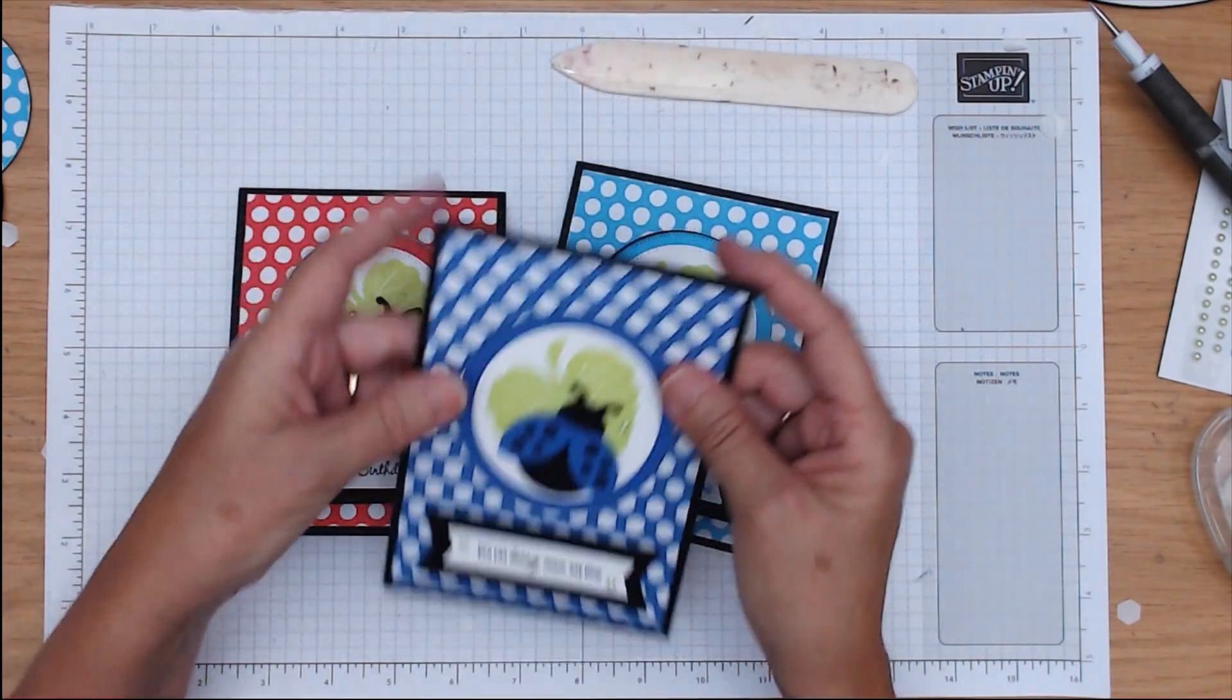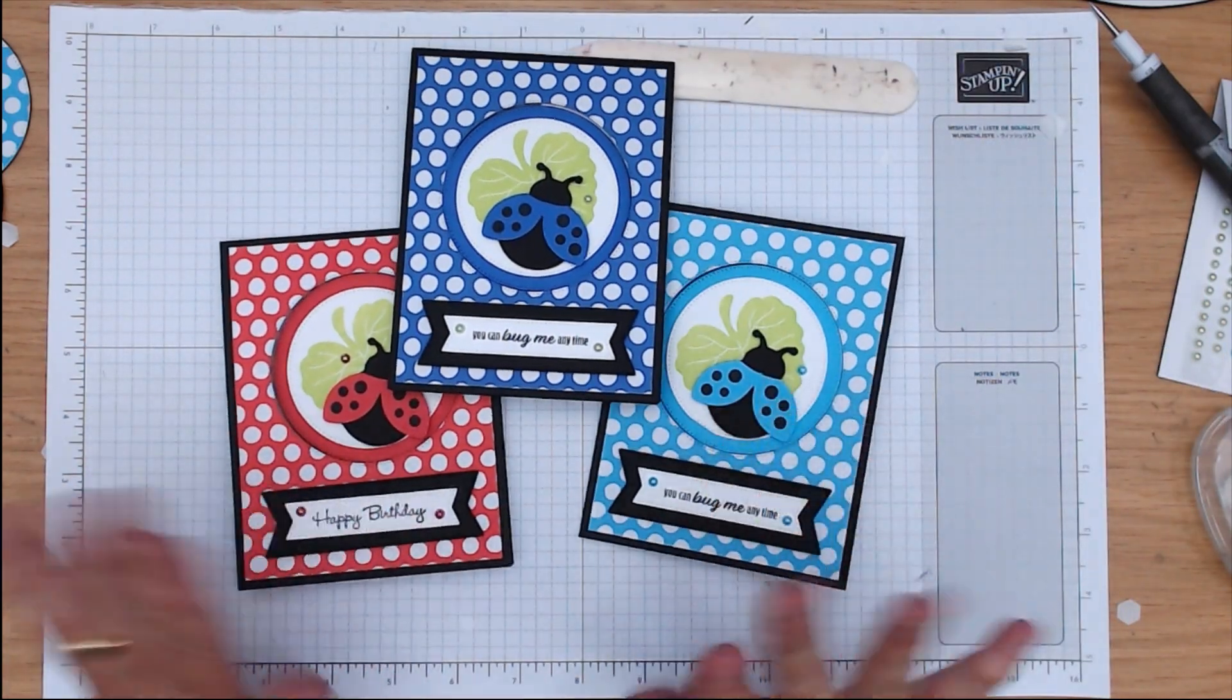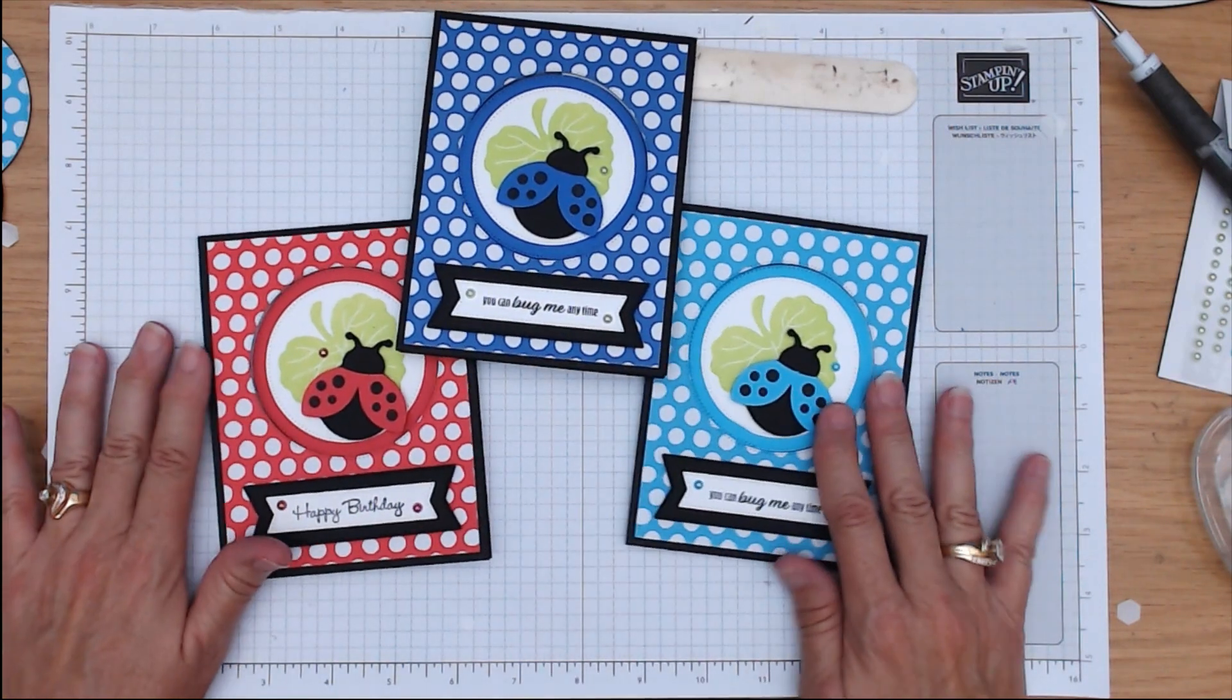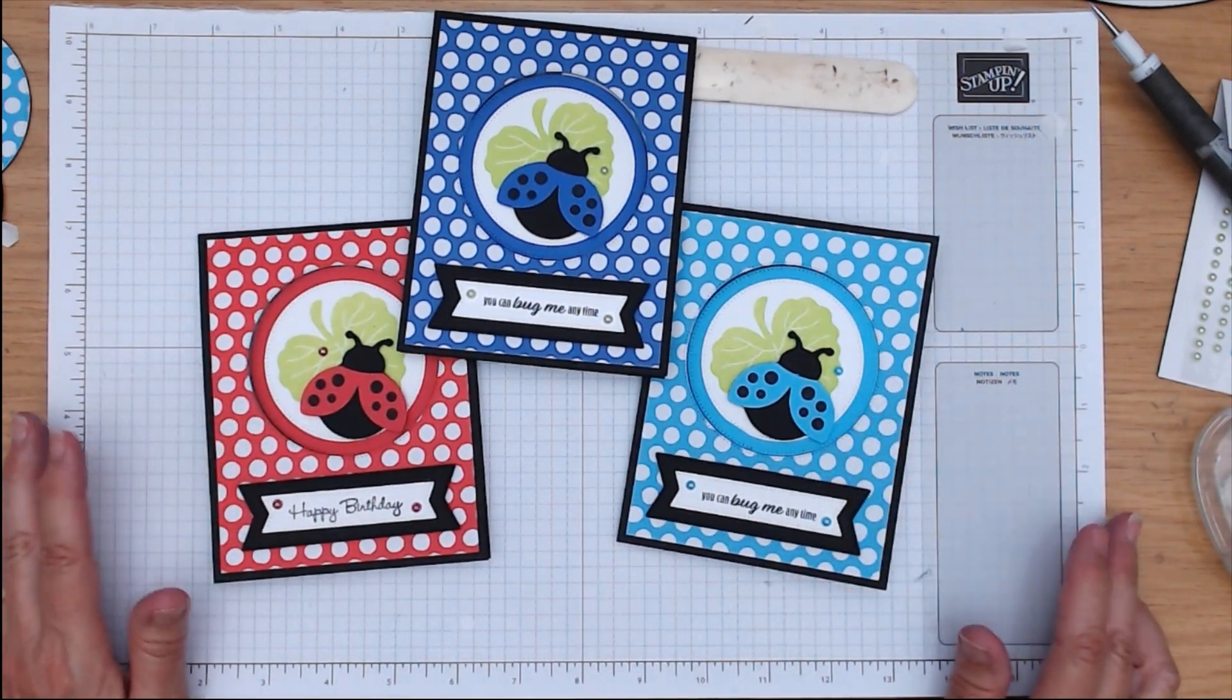So... And then I also did it in the Orchid Oasis. So there you have it. Isn't that fun? Love that. And I think, like I said, in all five of those in-colors would be adorable.